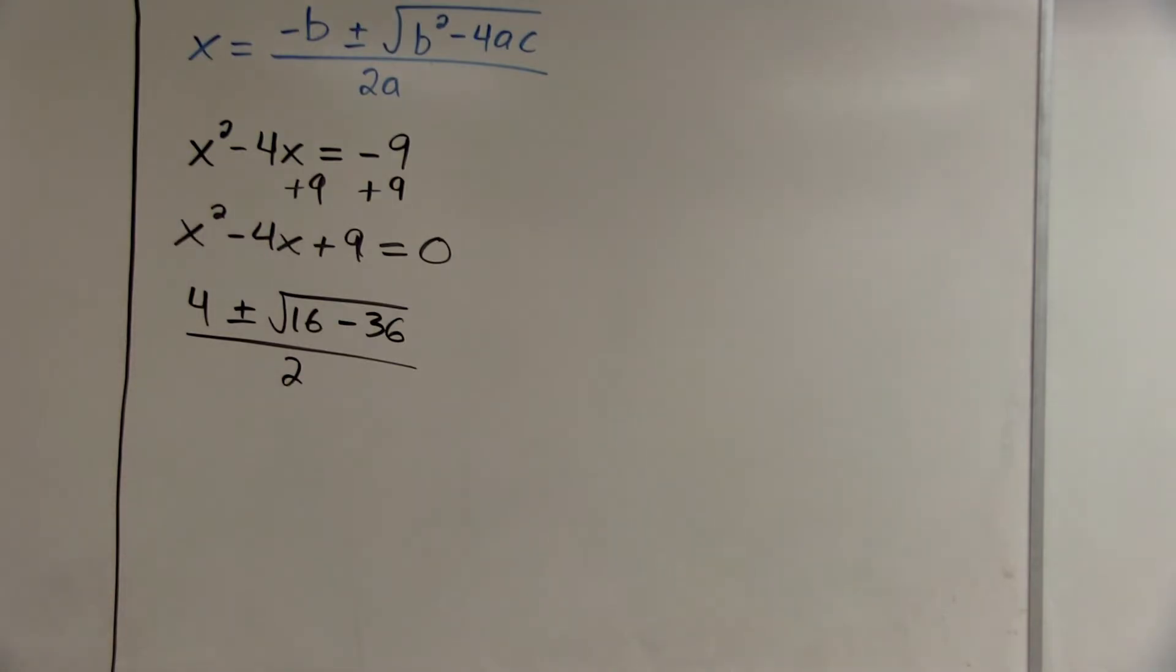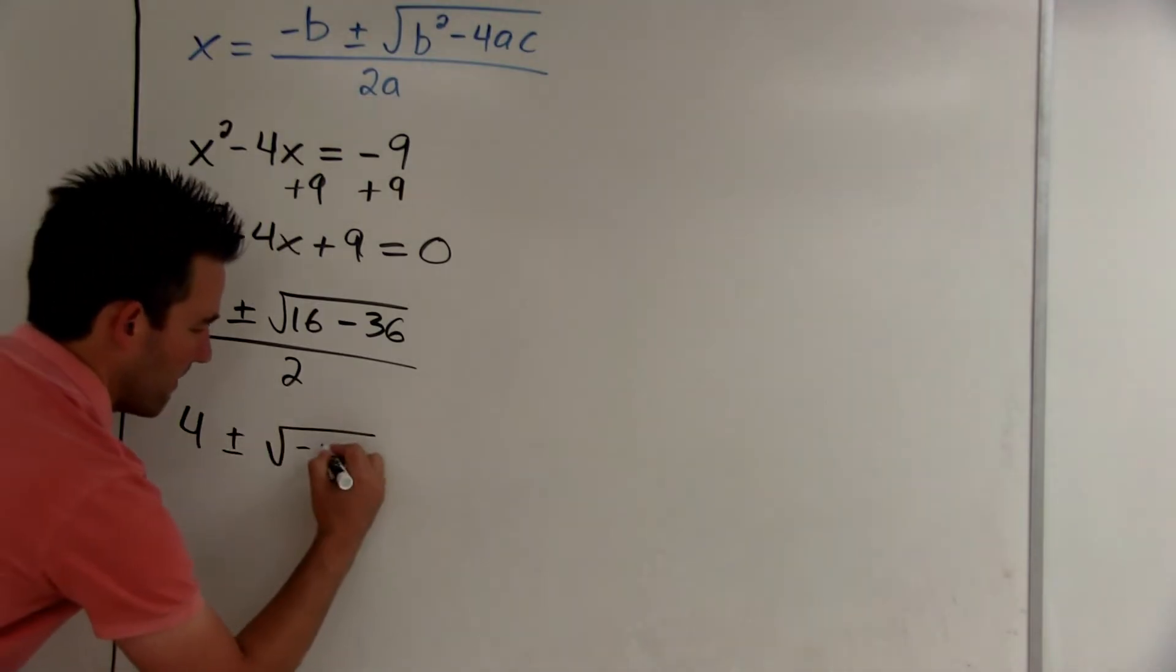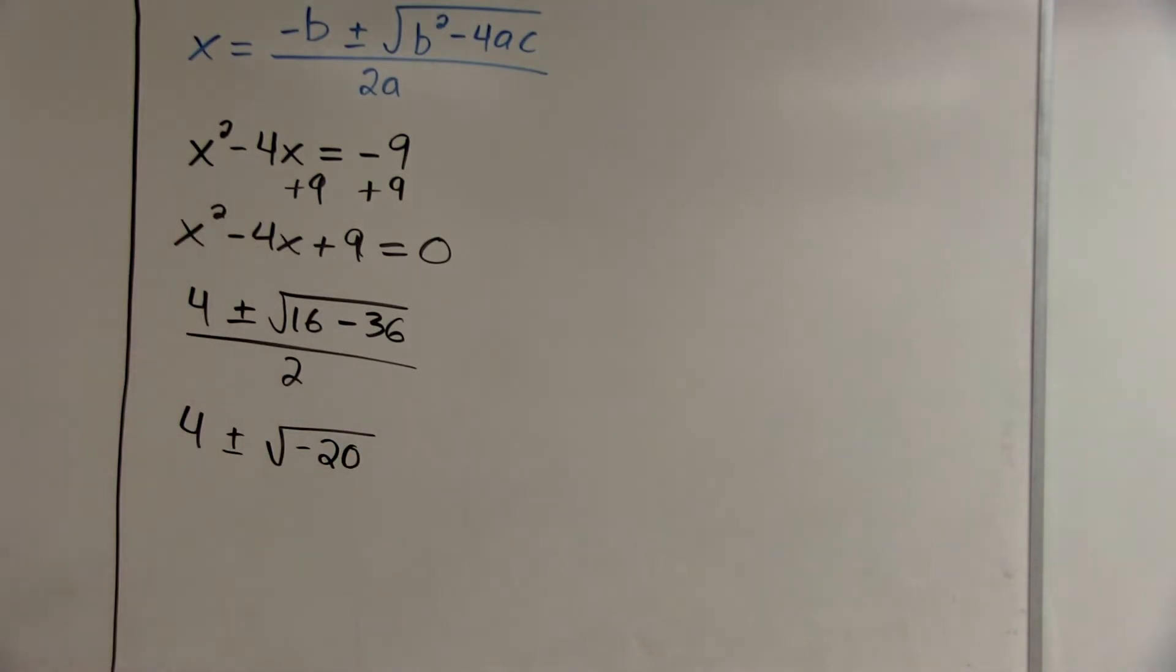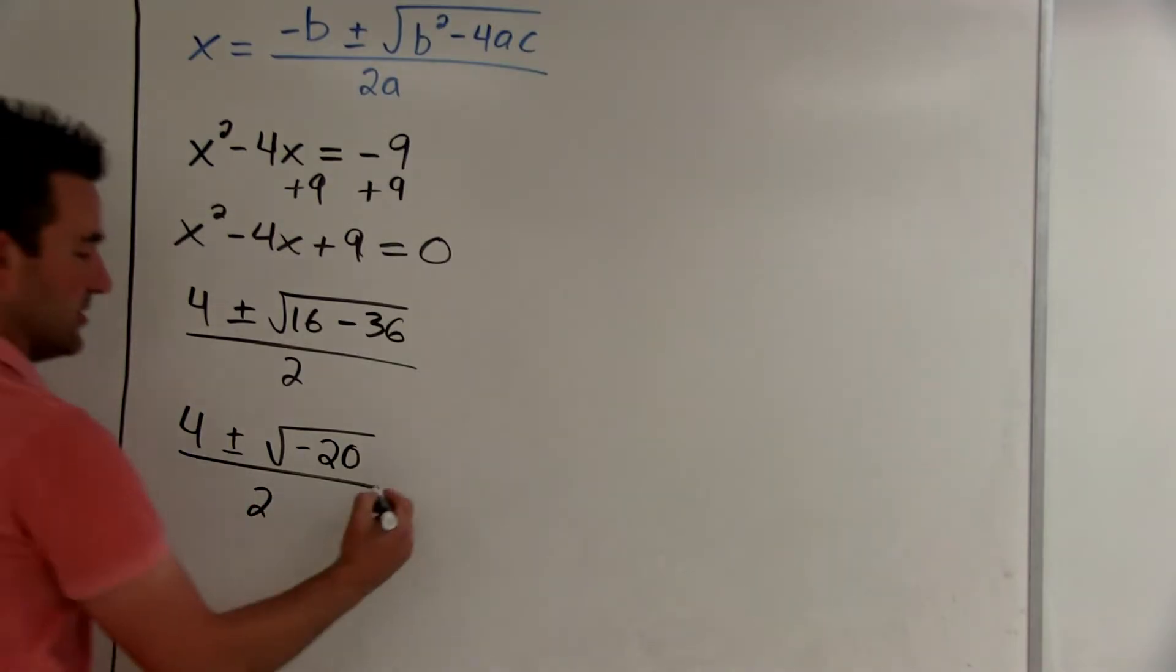On this one, when we simplify what's under the square root, we end up with a negative number. This means we're going to have non-real solutions. So to fix that, the first thing you do is bring out an i. That will make our square root positive.